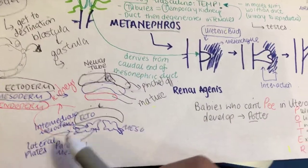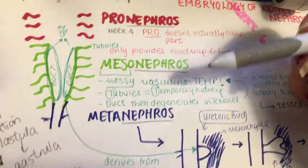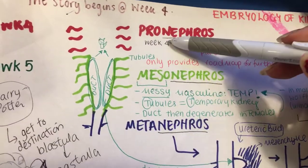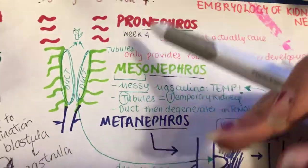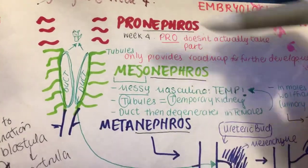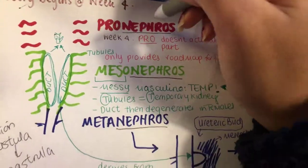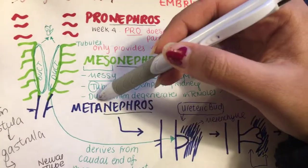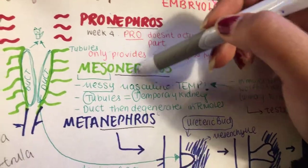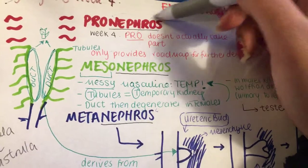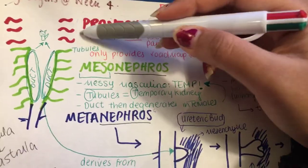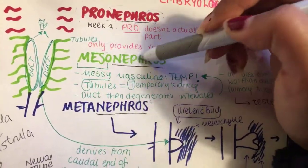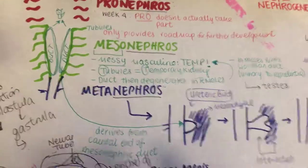The lateral plates give off our circulatory structures. Nephrogenesis begins at week four of embryogenesis, and there are three stages: pro-nephros, meso-nephros, and meta-nephros. Each has the word 'nephros' relating to kidney. 'Pro' means before, 'meso' is in the middle, and then you have meta-nephros.